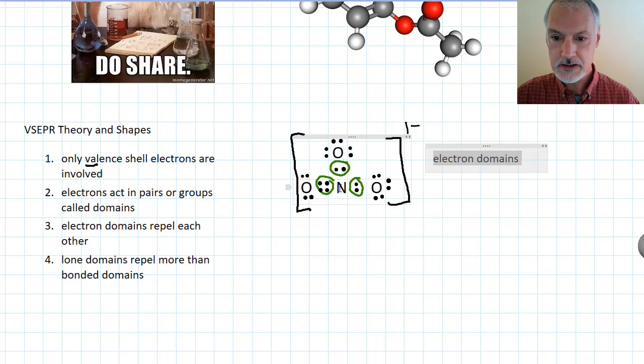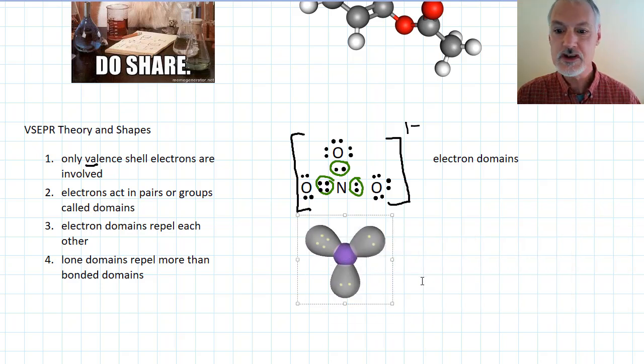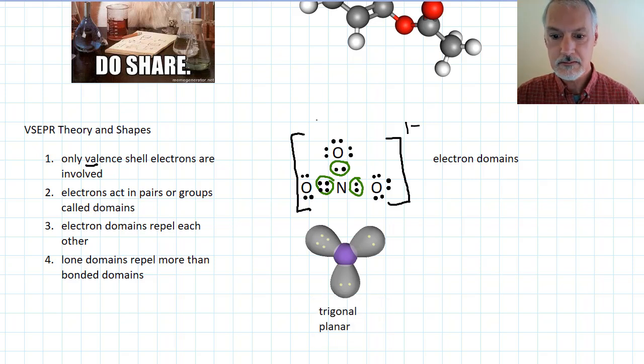So this particular molecule has three electron domains around the nitrogen. These domains repel each other. So these three regions are going to try to push themselves apart as far as possible. If they did that, they would take up this shape, thereby getting as far away from each other as possible. This shape is called trigonal planar, and we would expect that the angle between these lobes or these domains would probably be somewhere around 120 degrees.